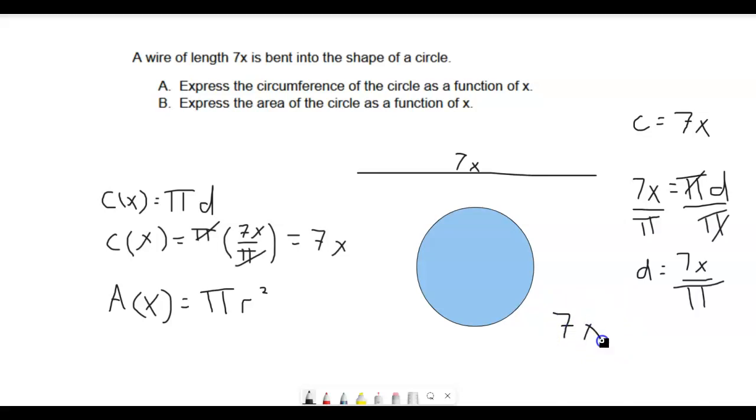and 7x is equal to, instead of diameter, I can do 2 times r. I'll put the 2 out front. It's usually seen like this, is equal to 2 pi times the radius. Now, if I divide both sides by 2 pi, I am going to get that the radius is equal to 7x all over 2 pi.